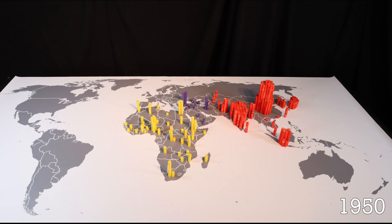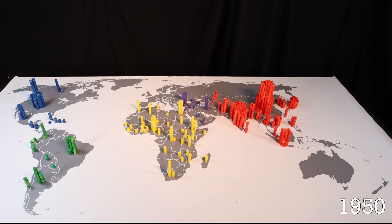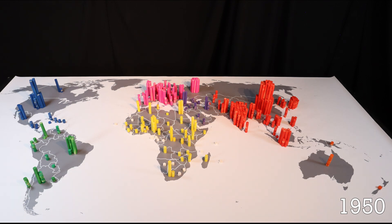One marker for every million inhabitants, colors for every region. Blue for North America, green for South America, pink for Europe, yellow for Africa, purple for the Middle East, red for Asia, and orange for Oceania. Countries below 1 million are marked in white.